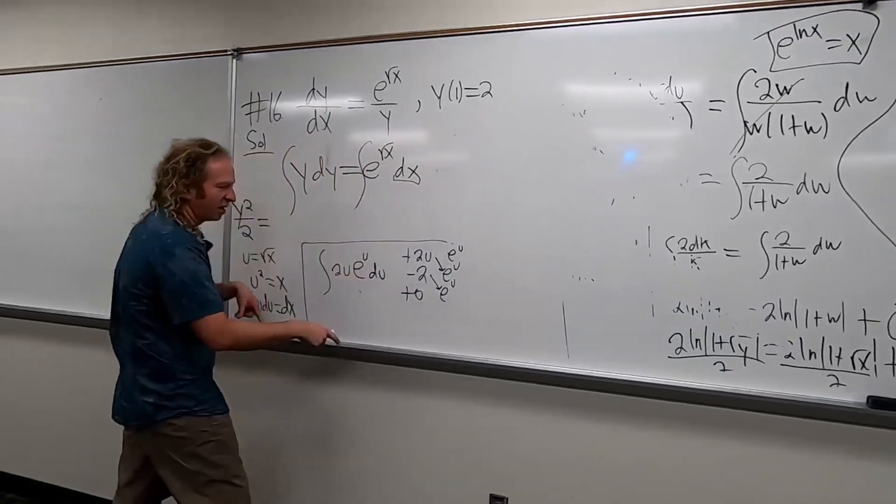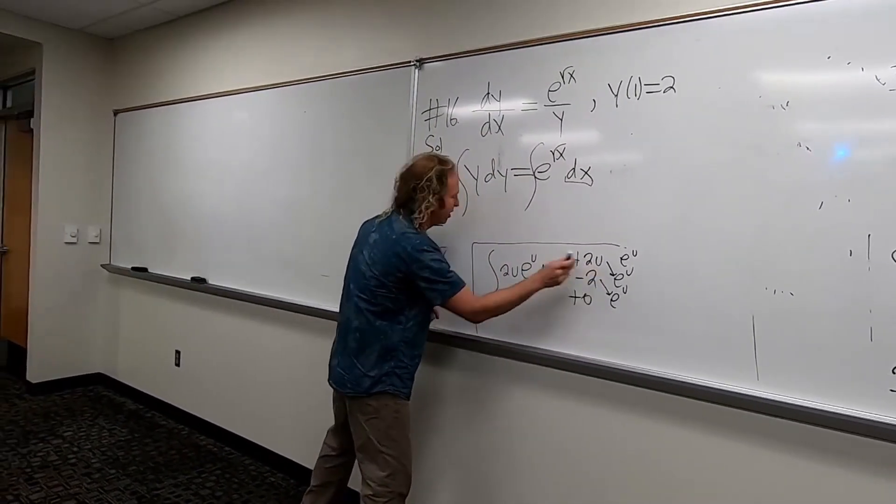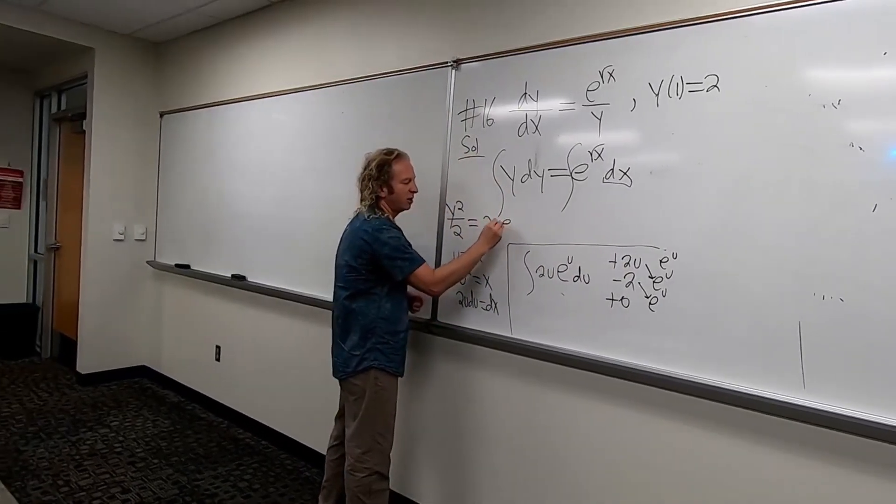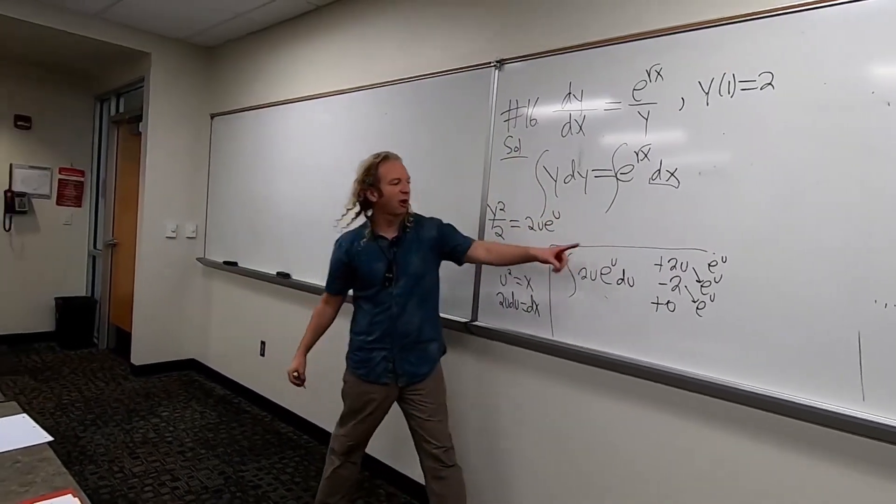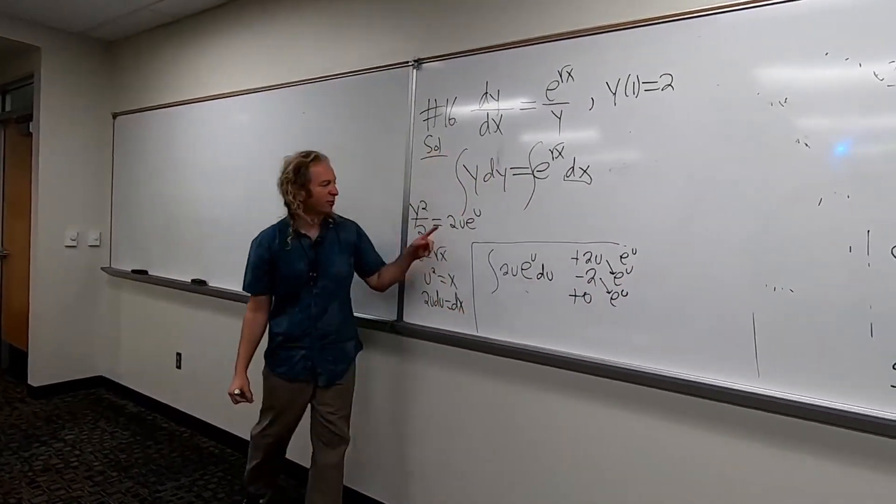So let me go over it again. Maybe we'll do another example of this, because maybe you've never seen this. It's called tabular. So you pick the piece that is eventually zero after repeated differentiation. So 2u. So 2, 0. You pick a piece that you integrate over and over again. And then plus, minus, plus. Draw arrows. Here's the answer.